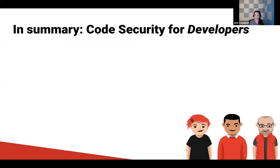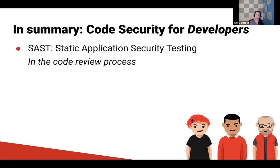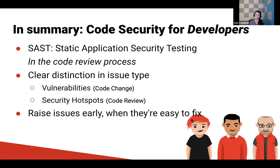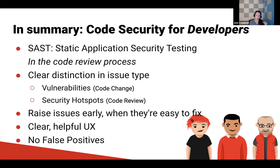In summary, what we do is code security for developers. We do static application security testing in the code review process. We give you a clear distinction between vulnerabilities — which require a code change — and security hotspots — which require a code review. We raise issues early when they're easy to fix, give them to you in a clear and helpful UX, and we do our very best to raise no false positives.